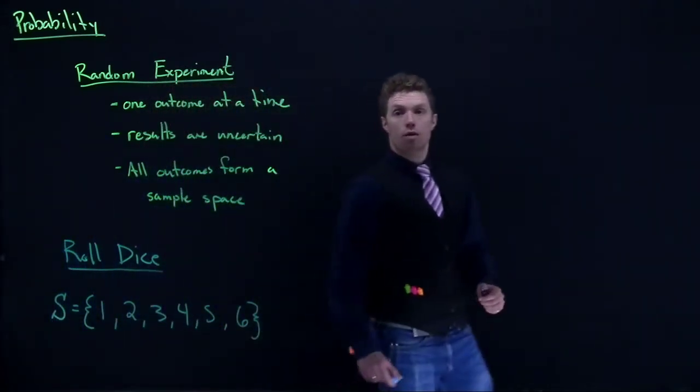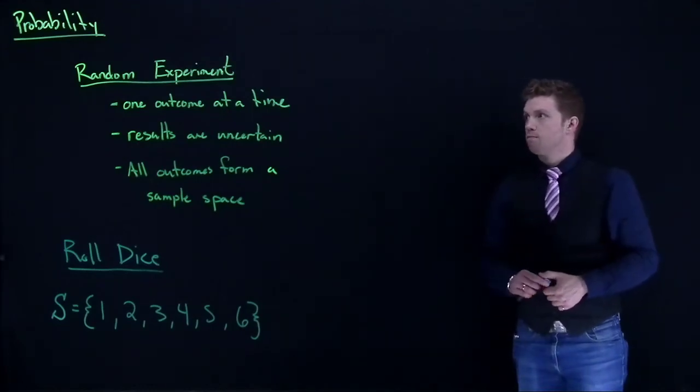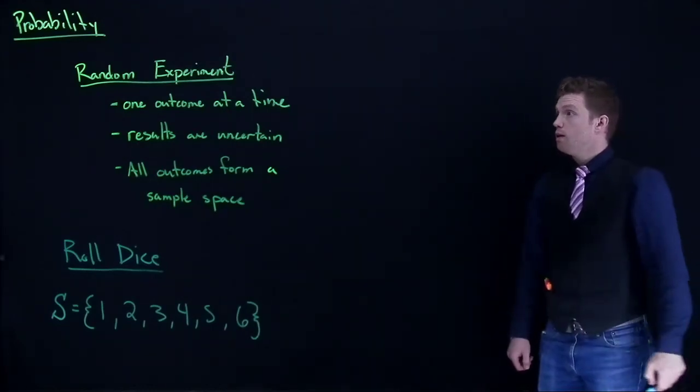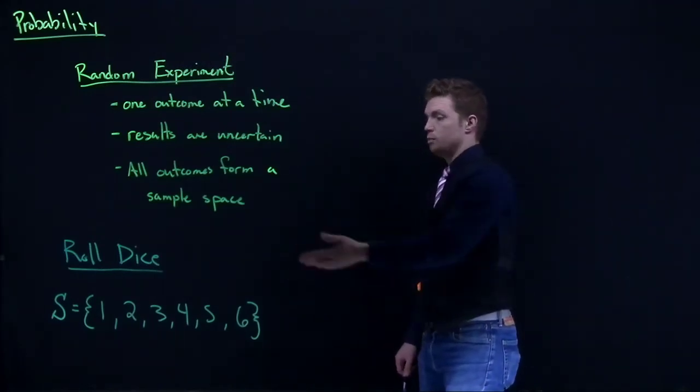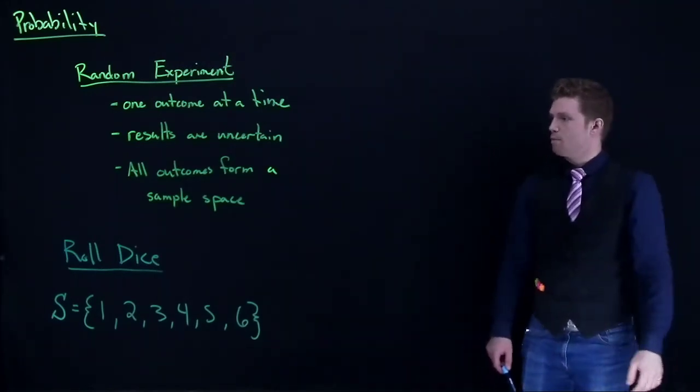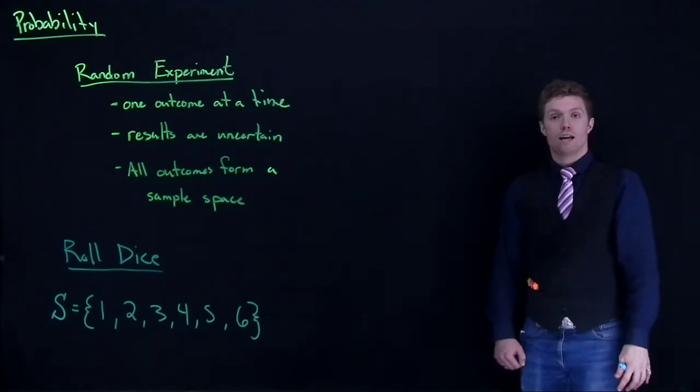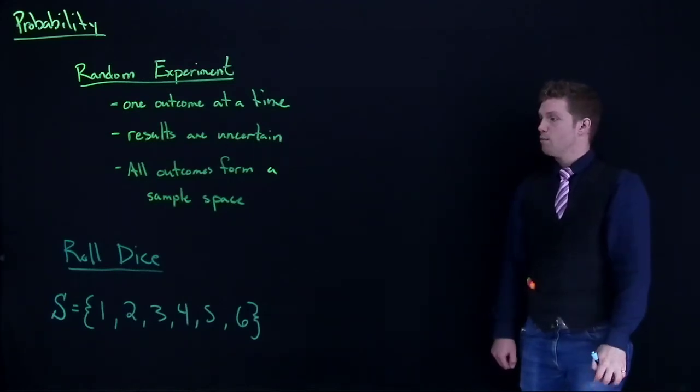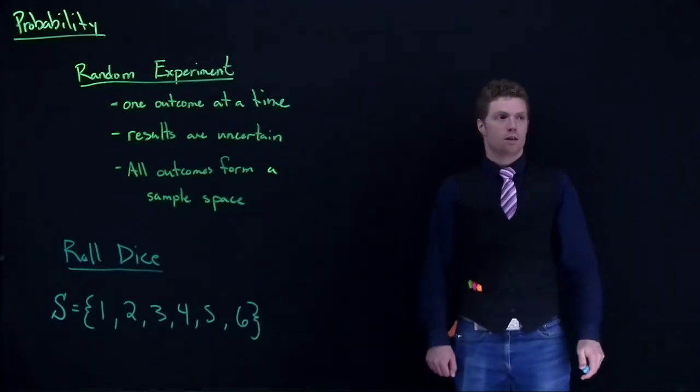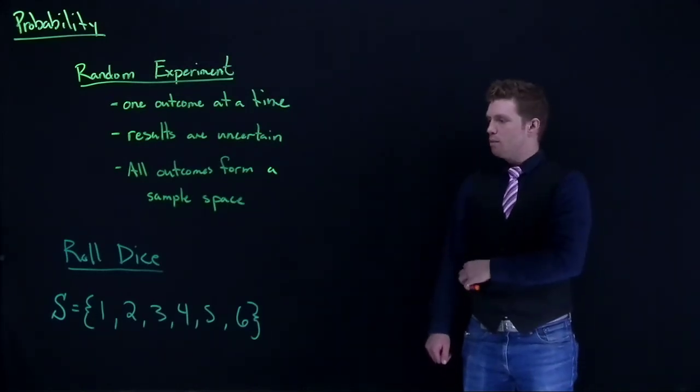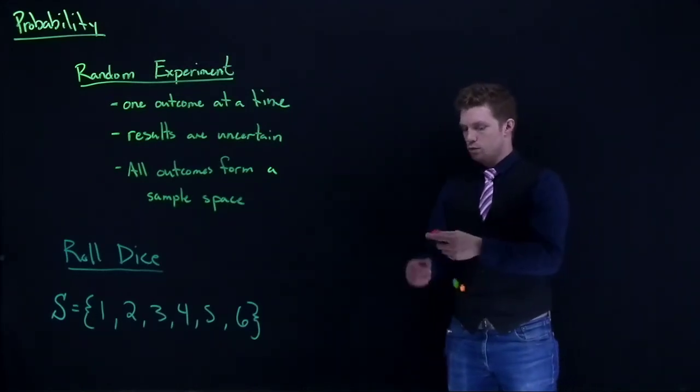That is what's known as a sample space. When we're doing this random experiment, we should have all possible outcomes that can come out. So that's my roll of a dice for my random experiment, and I have my sample space established.